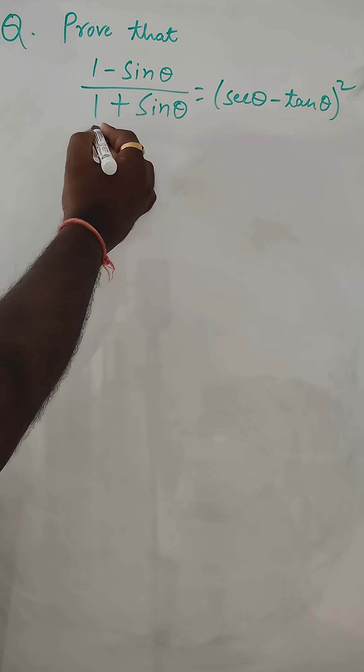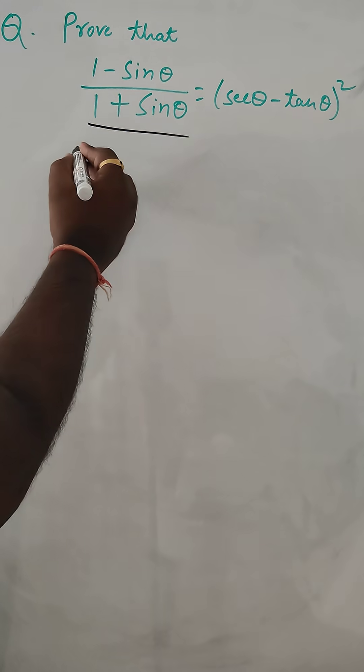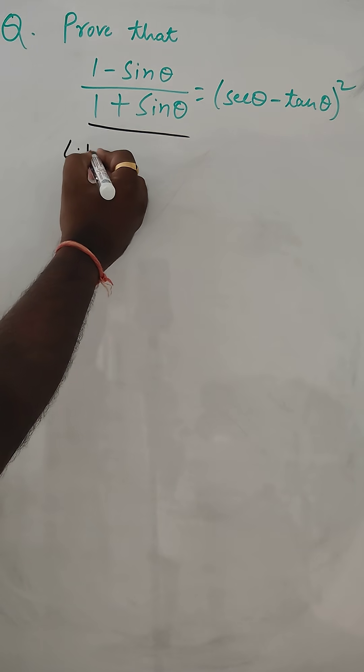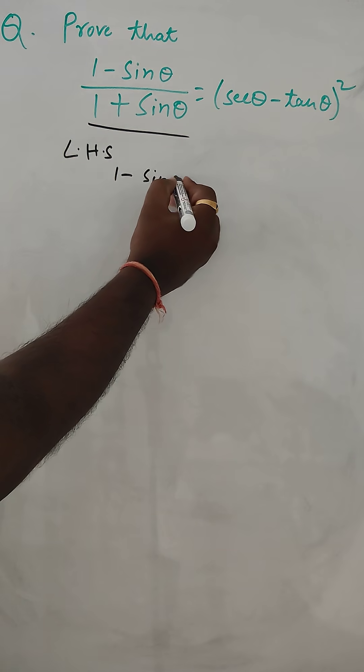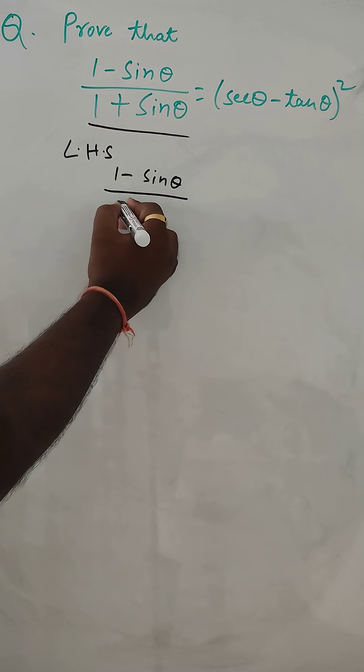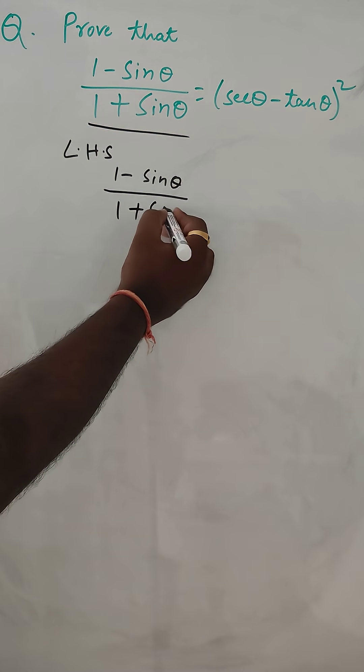Okay, taking LHS first. LHS: 1 minus sin theta divided by 1 plus sin theta.